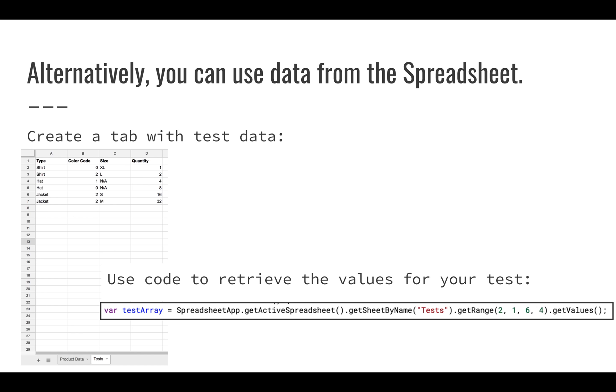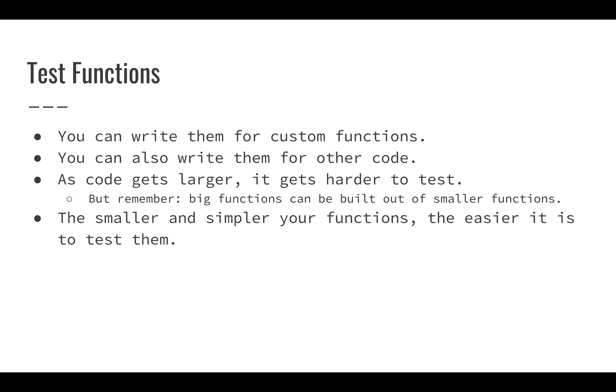And then I can just retrieve that. So here we're retrieving this data. We're going to go ahead and get this test data tab. And then we're going to retrieve the range from row one column one, and we're going to get six rows and we're going to get four columns so that we can test this more effectively. And that's going to work just the same way as just creating our own dummy data.